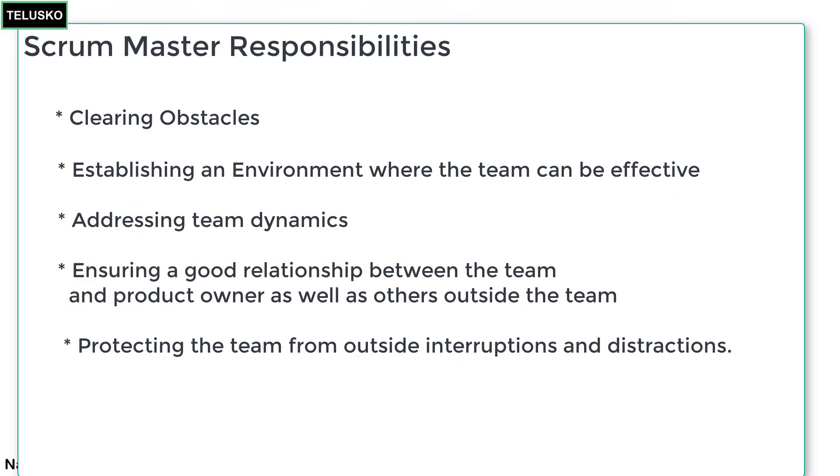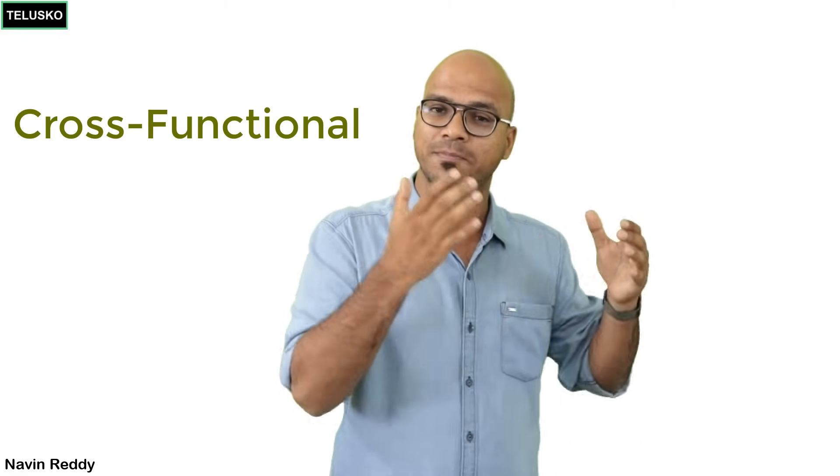The Scrum Master's tasks include clearing obstacles, establishing an environment where the team can work effectively, and preventing outside interruptions and distractions. As a developer, it takes about 30 minutes to get into the zone; an unexpected call or meeting breaks that focus and costs another 30 minutes to recover. The Scrum Master ensures there are no unnecessary distractions. The development team itself is cross-functional — every person should know everything: testing, development, design — so the team is self-organizing and not dependent on any single specialist.